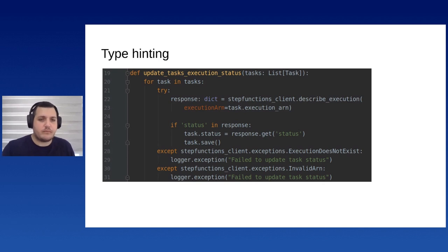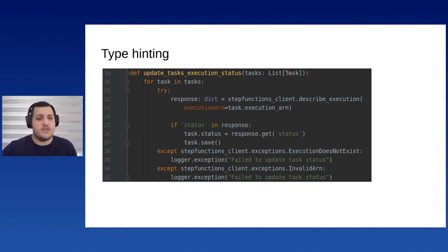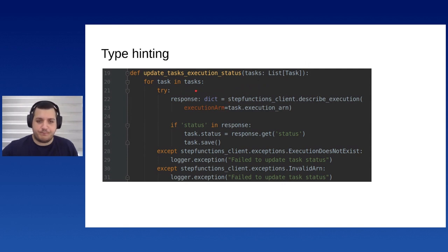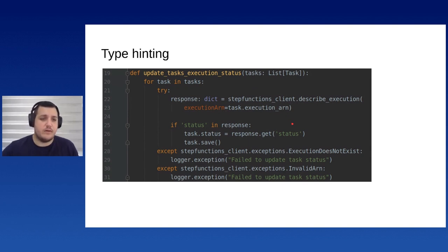We've also added type hinting in the function argument. We now know this is going to be a list of tasks — Django model objects in this case — and we've added a dict type hint for the return. This gives us a lot more to work with: before, we weren't even sure if this was a generator or something else. That's a step forward for the next person picking this up.